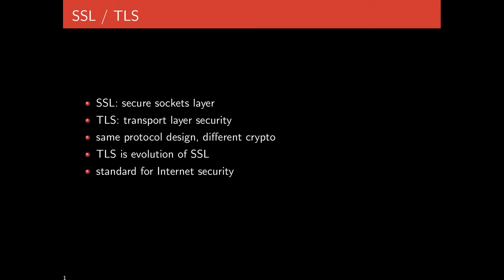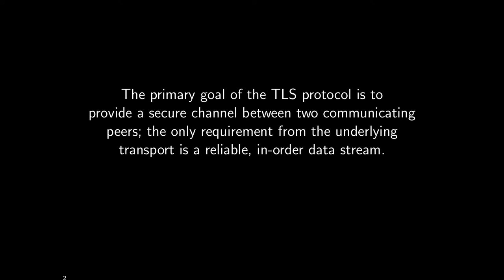In this lecture we're going to talk about how TLS actually works, the types of protocols, how it evolved over time, and look at some of the communication that TLS does. The primary goal of TLS is to provide a secure channel between two communicating peers. The only requirement is that they have a reliable in-order data stream — that is what TCP provides. TLS runs on top of a socket, providing a secure communication channel between the two endpoints.